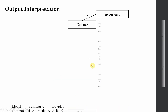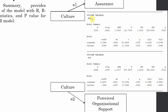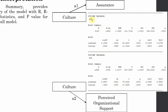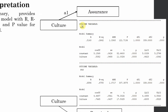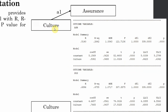The model summary provides R, R-squared, F-statistic, and p-value for the overall model. Since there are multiple outcome variables, there is a separate model summary for each. The first model summary shows assurance as the outcome variable being influenced by culture — assurance is the mediating variable and culture is the exogenous or independent variable.